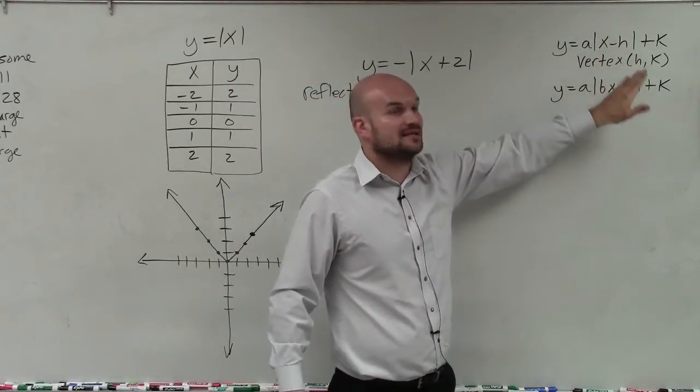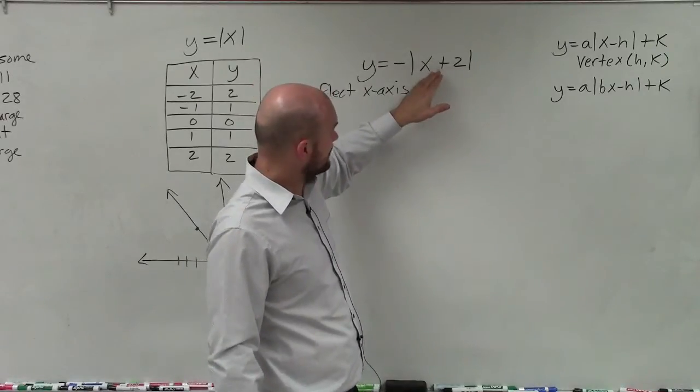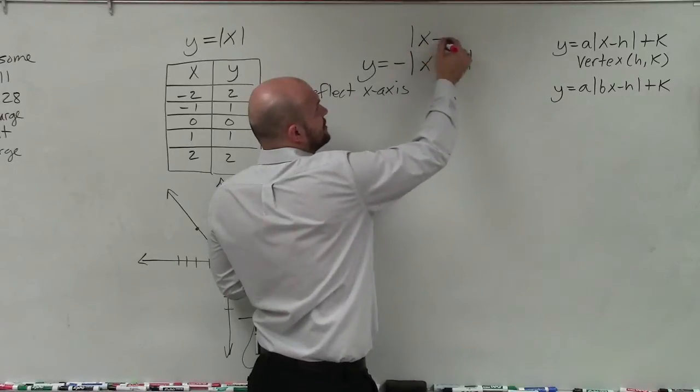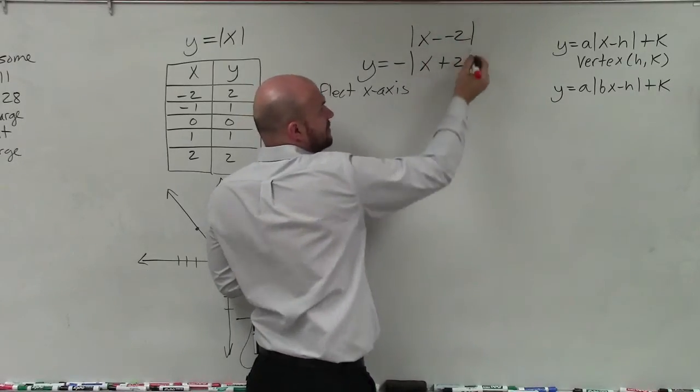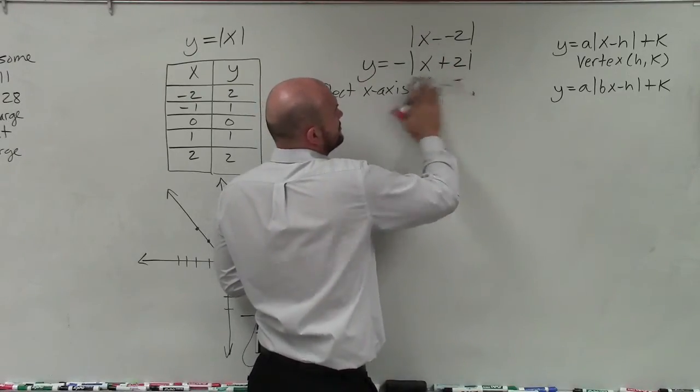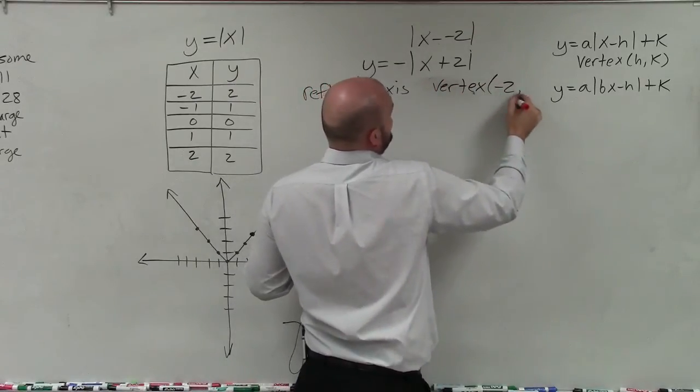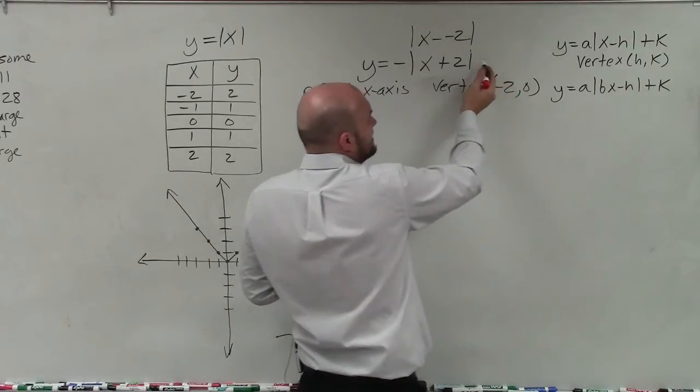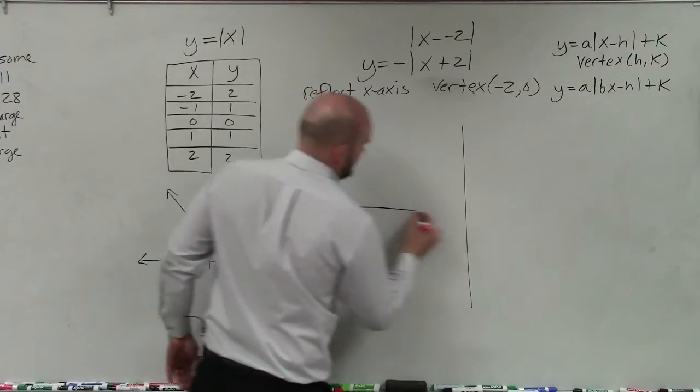Well our equation is x opposite of h. So x opposite of 2 would be negative 2, or you could write it like this: x opposite of negative 2 is x plus 2. Same thing. But therefore, hopefully you guys can see that my new vertex is at negative 2, 0, and 0 because I'm not adding anything outside of my absolute value. So now to graph this.